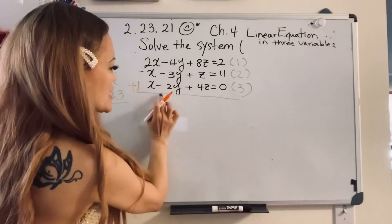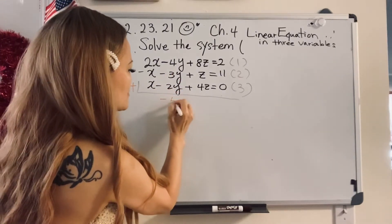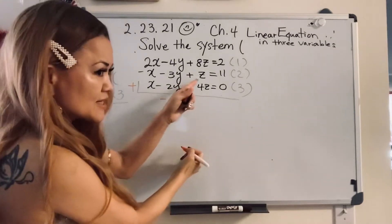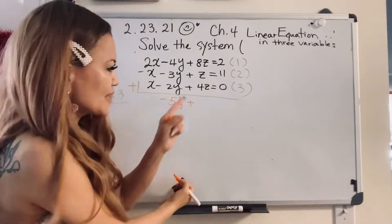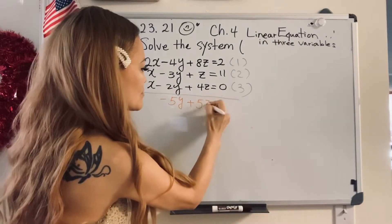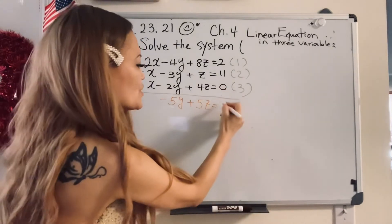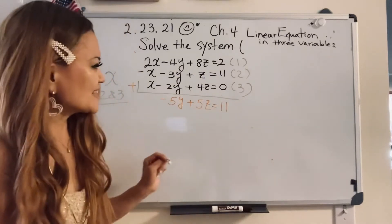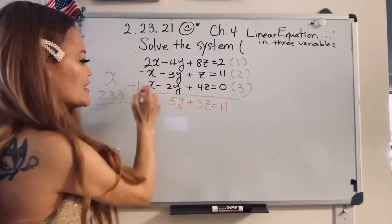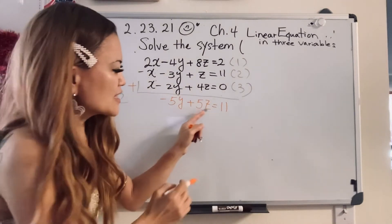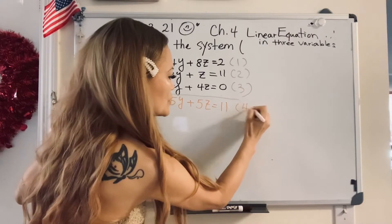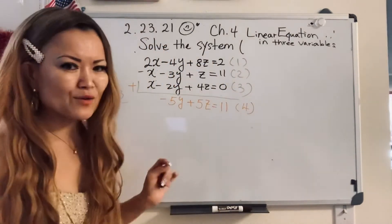And then minus three y minus two y is negative five y. Plus z, don't forget one z, and four more z, so it's going to be five z. Equal 11 plus zero, 11. Yeah, so we eliminated x, right? And then we made it two variables, one equation. So I'm going to say number four equation.